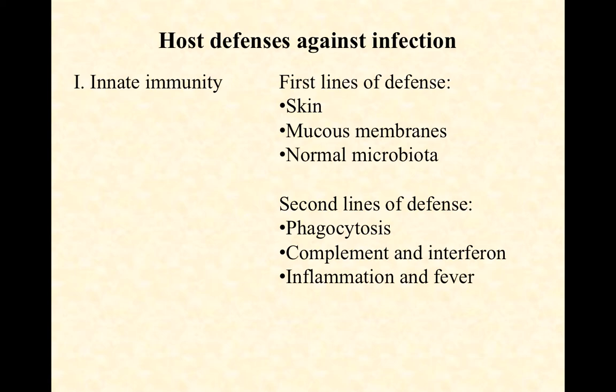Our second line of defense, assuming a pathogen gets past that first line, includes phagocytosis — phagocytic white blood cells devouring those pathogens, still nonspecifically. They don't really care if it's E. coli or salmonella; they just know it's foreign and they're consuming it. There are also some immune chemicals: complement, which is produced by the liver, and interferon, which is extremely important in antiviral activity and plays a big role in fighting viral infections. Finally, we'll touch on inflammation and fever and their possible roles in our innate defenses.